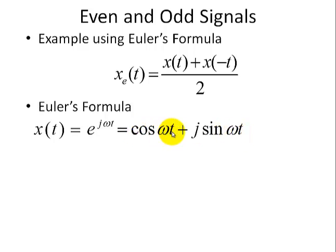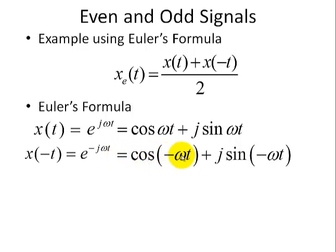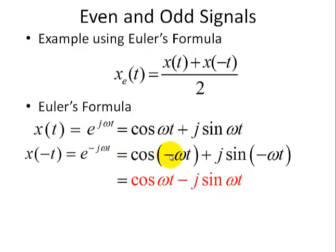Then we substitute x of t for x of minus t — in other words, we substitute the argument of minus t into the exponent. So we have e to the minus j omega t, where j is an imaginary number. We substitute to get cosine of minus omega t plus j sine of minus omega t, replacing t with minus t in each of these functions. Now we use the even property — cosine is even, so cosine of minus omega t equals cosine omega t. And since sine is odd, sine of minus omega t equals minus sine omega t.